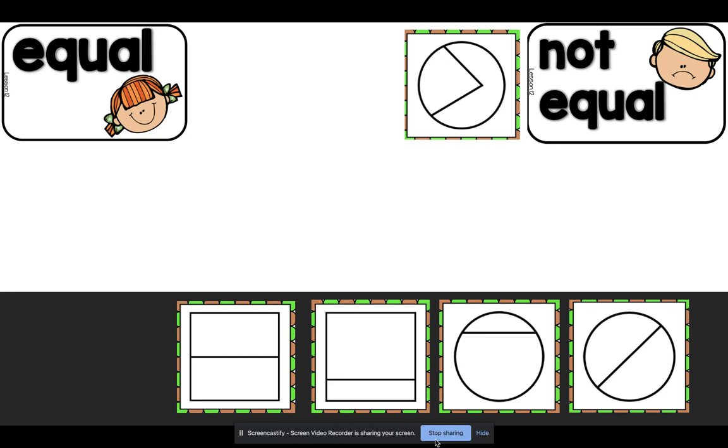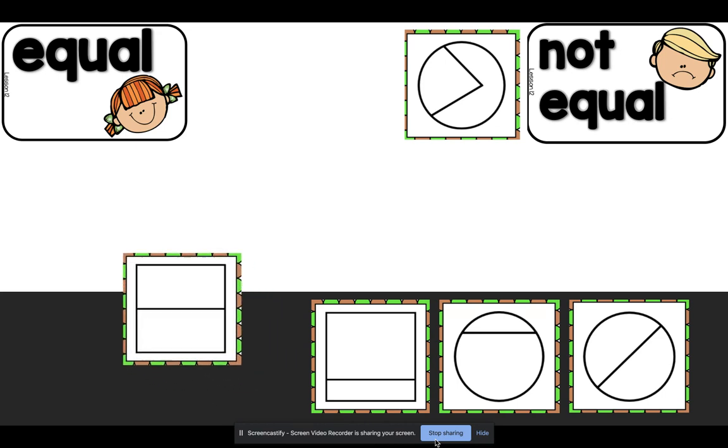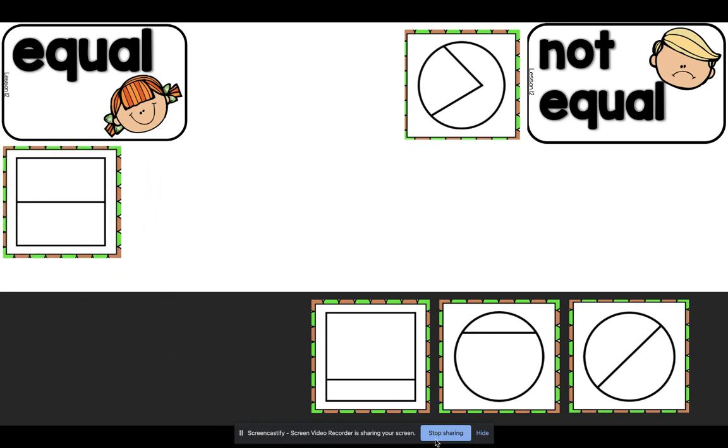What about the second shape, the square? Is the square equal or not equal? Yes, this square has two equal parts. This square is partitioned in half. So therefore, it's equal.